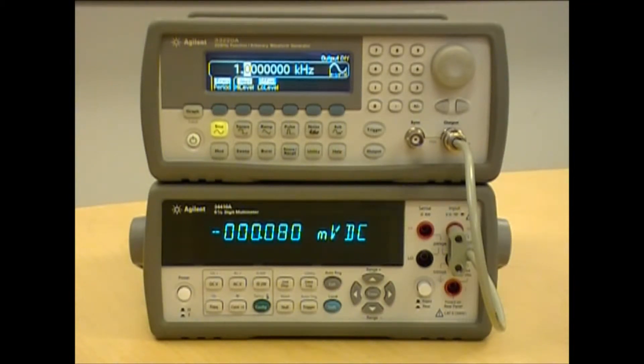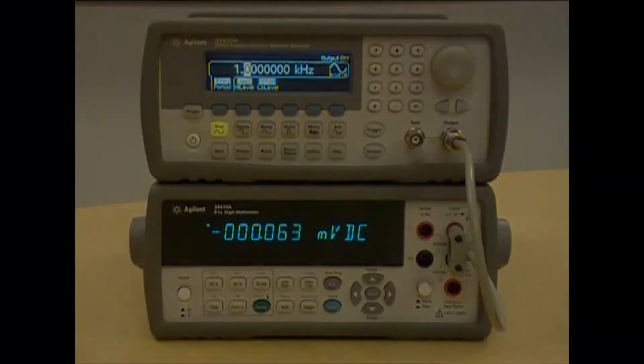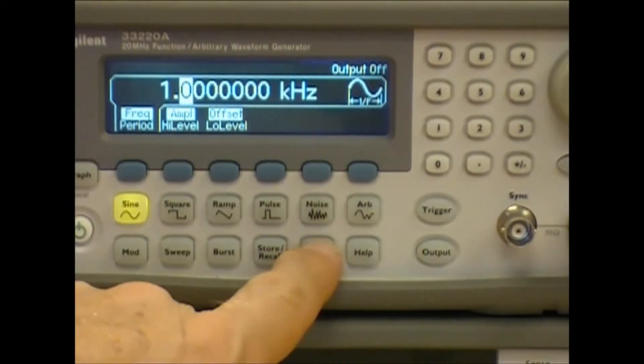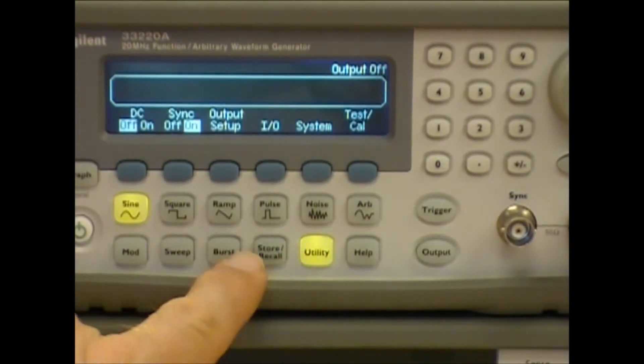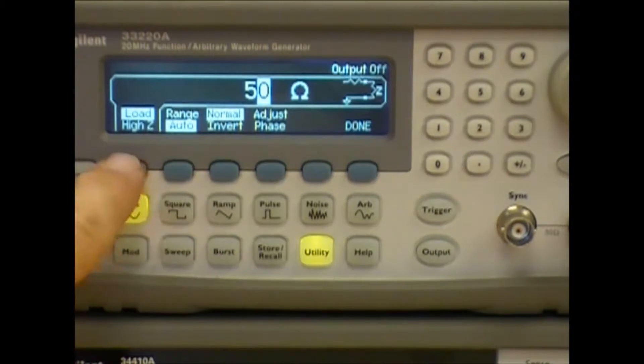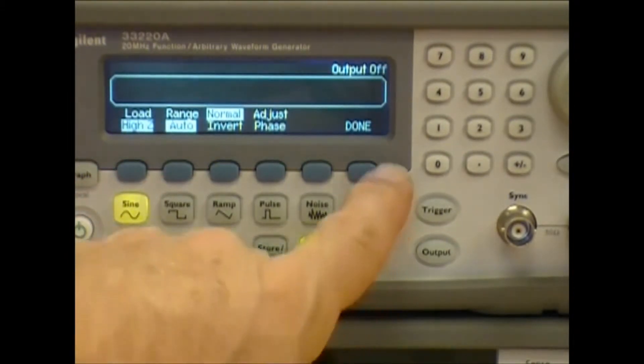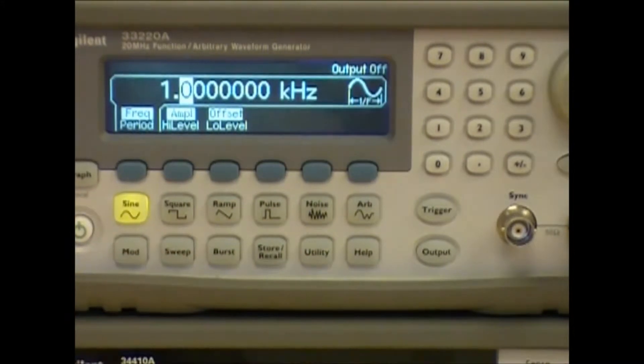Let's set up the function generator first. The first thing that I'd like to do in setting up the function generator is to make sure that the output impedance is high Z. This is important when you're sending the signal into a DMM. Okay, now we've got that set to high output impedance.